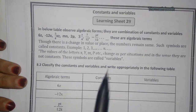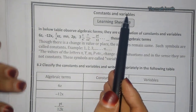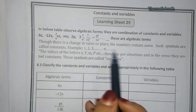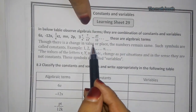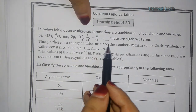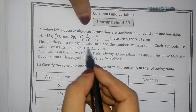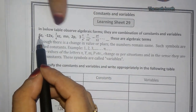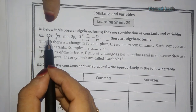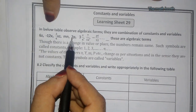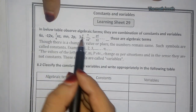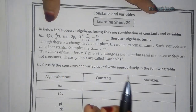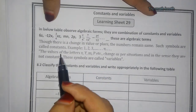Constants are nothing but constant numbers. When there is a change in values or place, the number remains the same — those numbers are called constants. For example, 6 is a constant, 12 is a constant, 2 is a constant, 3 is a constant, and 7/12 is a constant.